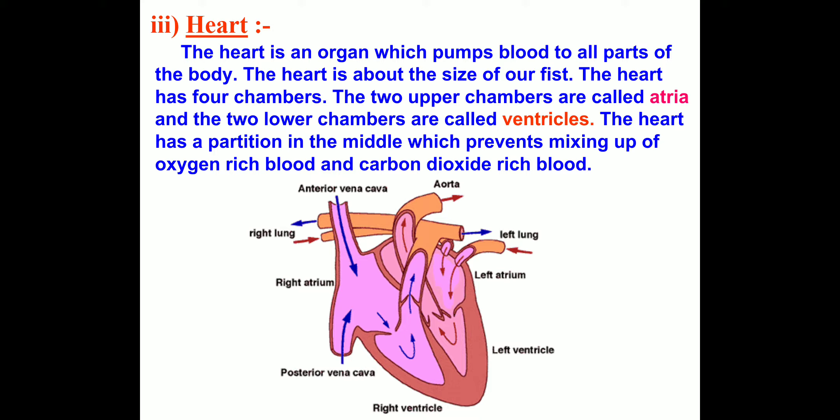The heart is an organ which pumps blood to all parts of the body, and the heart is about the size of our fist. The heart has four chambers. The two chambers at the top are called upper chambers, or atria, and the two lower chambers are called ventricles. These chambers are separated by a muscular wall called the septum.